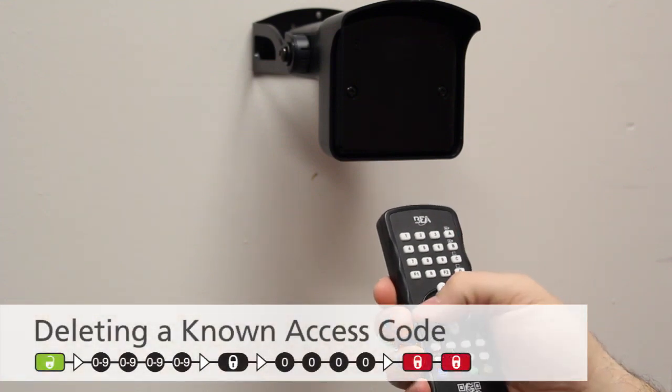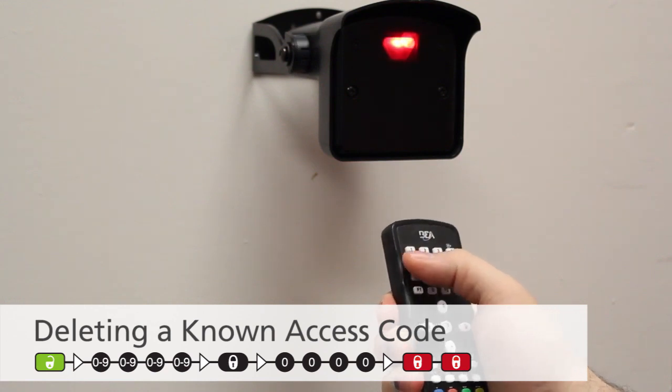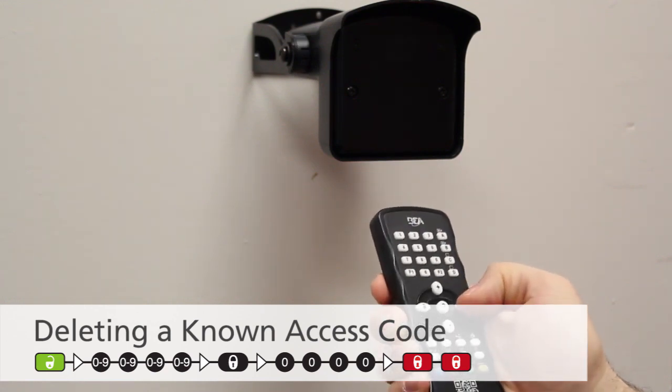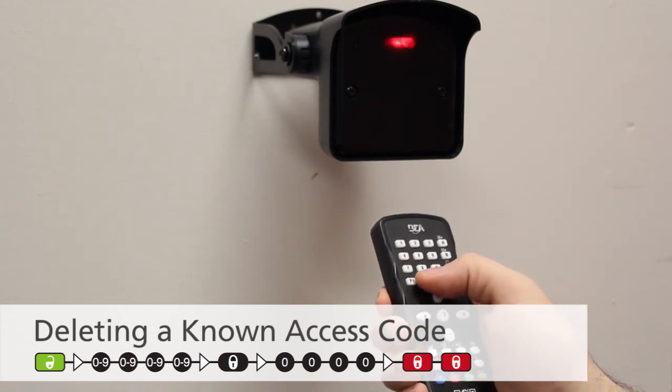If you know the access code set to the sensor and wish to delete it or reset it, press unlock, then enter the access code, followed by lock, 0000, then lock, lock.